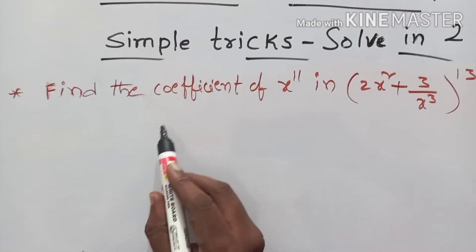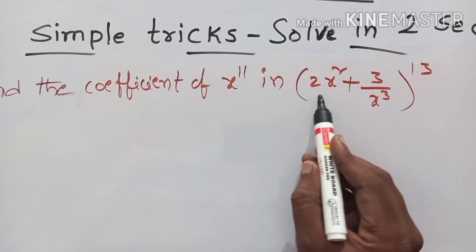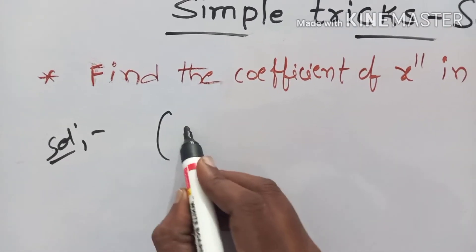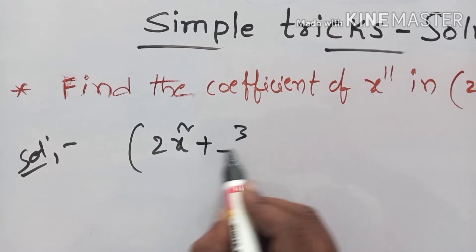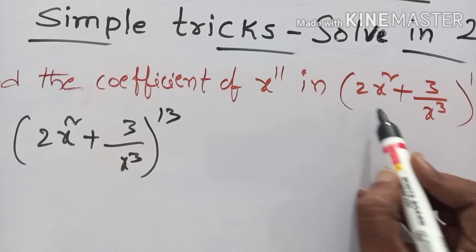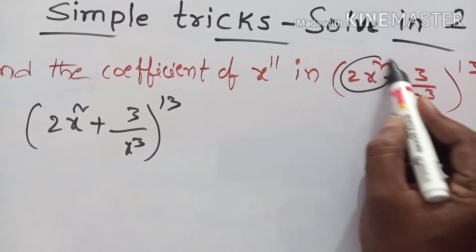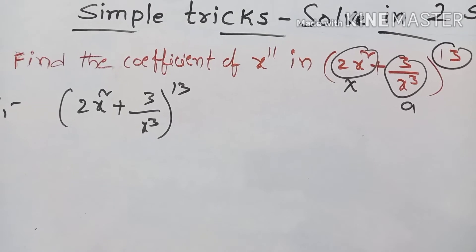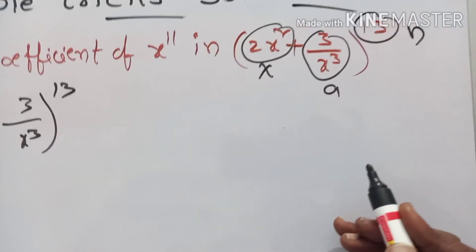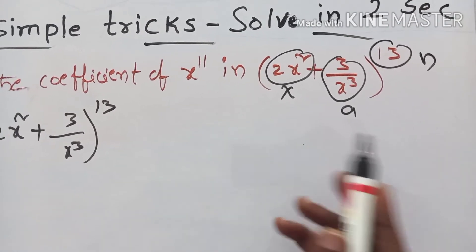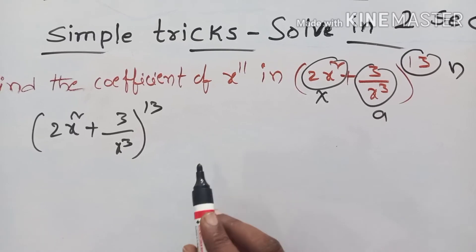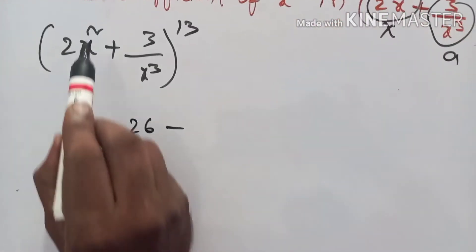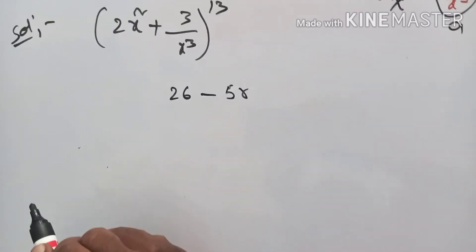Next question: find the coefficient of x power 11 in (2x squared plus 3 by x cube) whole power 13. Given expansion is (2x squared plus 3 by x cube) whole power 13, comparing with (x plus a) whole power n. The general term is t(r+1) equals nCr times x power (n minus r) times a power r. First, find r value: 13 into 2 equals 26, minus 2 plus 3 gives 5r. The power equals 11 because we need the coefficient of x power 11.